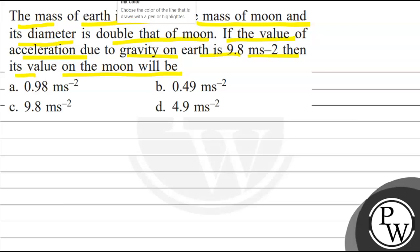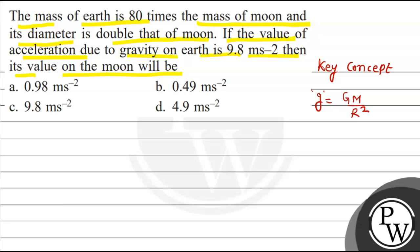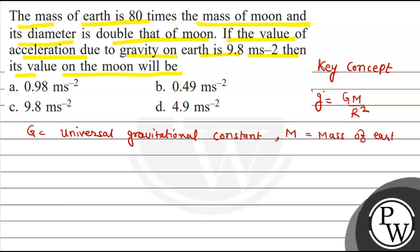Now let's discuss the key concept. The key concept is the formula used to calculate g. The formula to calculate acceleration due to gravity is: small g equals GM upon R squared. Here, capital G is the universal gravitational constant, capital M is the mass of earth, and capital R is the radius of earth.